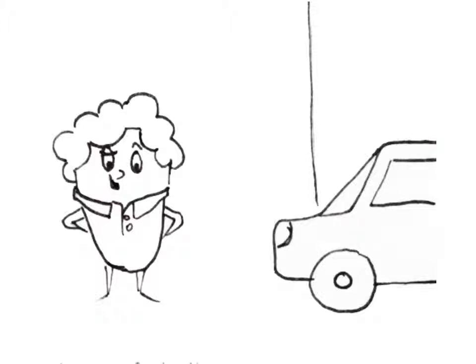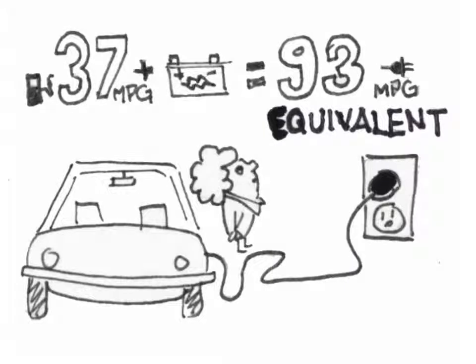Let's look at this plug-in hybrid. 93 miles per gallon equivalent. It's the MPG it gets in gas plus electric power converted to the energy value of gas, 93 MPG equivalent.